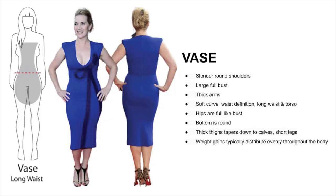I hope this clarifies the confusion in the fruit shapes, as some of you call them. Now, here are the key features of the vase: slender round shoulders, large full bust, thick arms, soft curvy waist definition, long waist and torso. Hips are full like the bust. Bottom is round with thick thighs tapering down to calves, and short legs.